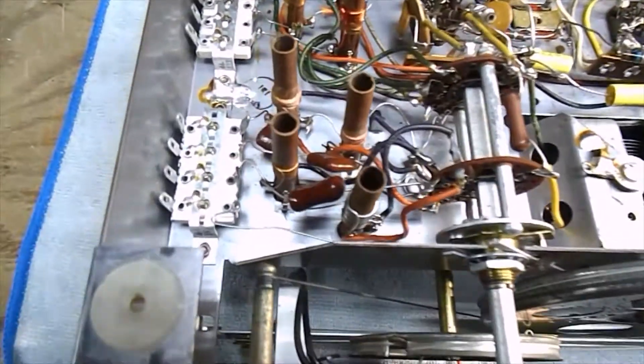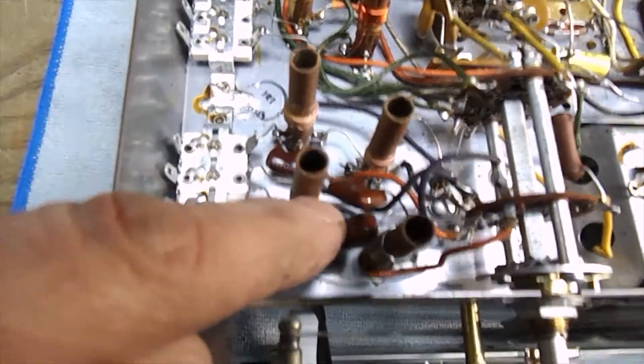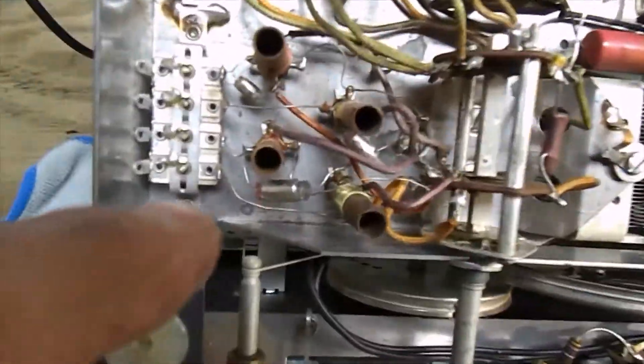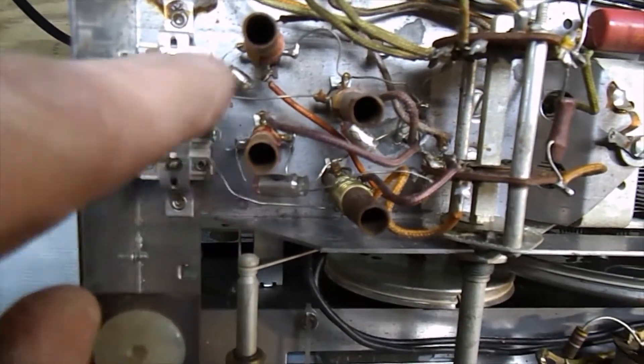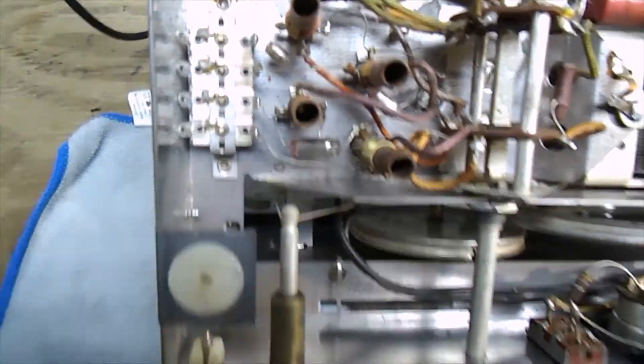One other new thing is there's possibly new capacitors here in the tuning coil. See these nice shiny brown capacitors? There's three of them here and on the parts radio there are these silver barrel type capacitors. So those look like they may have been replaced I'm not sure.